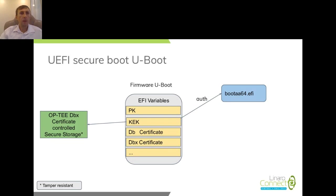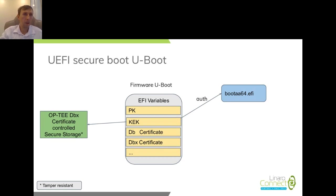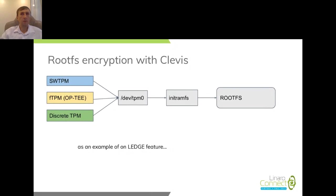From the left side of the picture, we have OPTEE. OPTEE is a trusted operating system that runs in the secure world on the CPU. Inside OPTEE, we can have storage for key certificates — the Platform Key, Key Exchange Key, DB and DBX — we can store these inside OPTEE, providing tamper resistance. For rootFS encryption, we use a tool named Clevis, which I will discuss in a few slides.